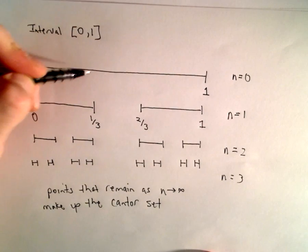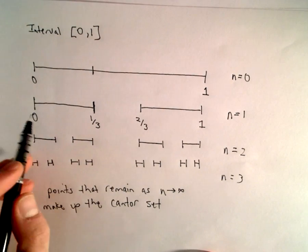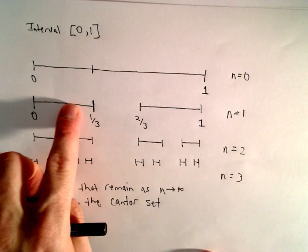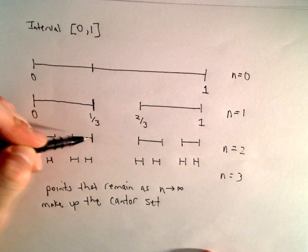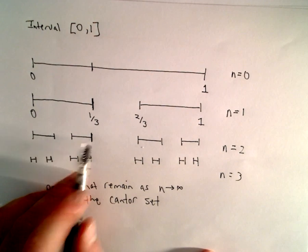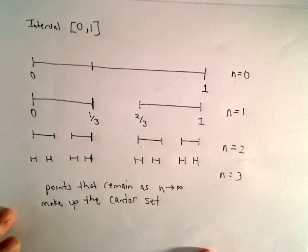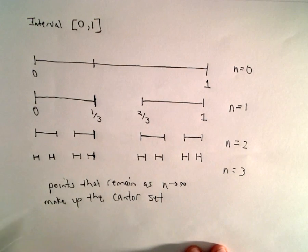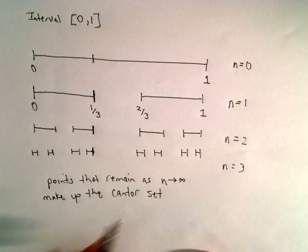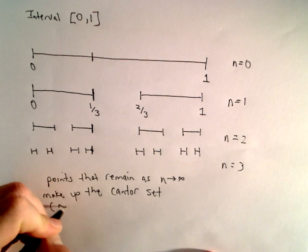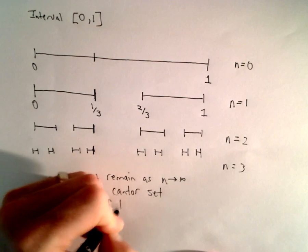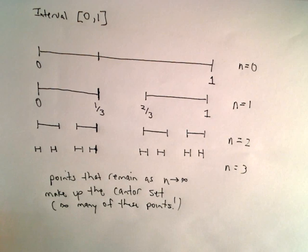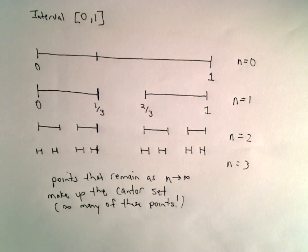Notice, for example, the point located at one-third of the way through the number line — that point is always going to stay there, because you keep removing the middle third but that point sitting at one-third is always going to be there. So that would be a point in the Cantor set. And again, just keep doing this over and over; the points left over make up the Cantor set, and clearly there are going to be infinitely many of them.